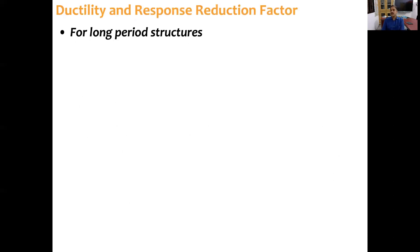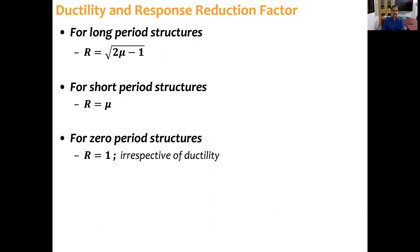There is a relationship between ductility and response reduction factor. For long period structures, R equals square root of 2 mu minus 1, where mu is ductility factor and R is response reduction factor. For short period structures, R equals mu. For zero period structures, that means rigid structures, R equals 1 irrespective of ductility.